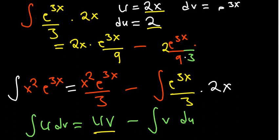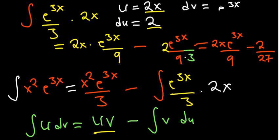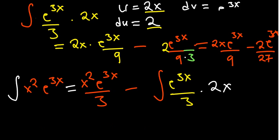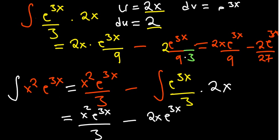So the inner integration by parts gives us 2x e to the power 3x over 9 minus 2e to the power 3x over 27. Going back to the main expression, we have x squared e to the power 3x over 3, minus the quantity 2x e to the power 3x over 9 minus 2e to the power 3x over 27.